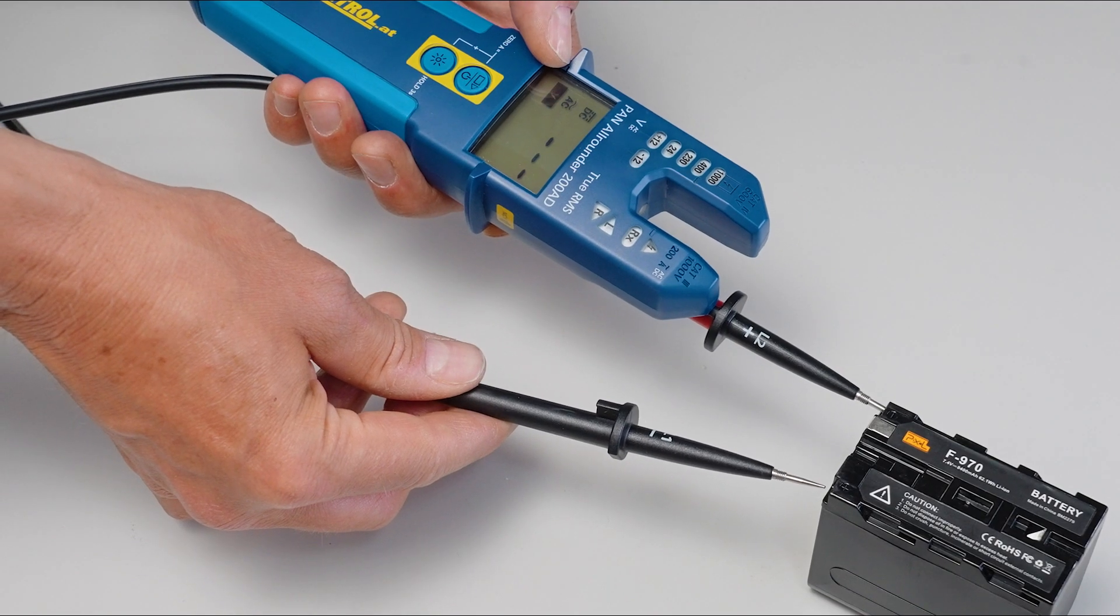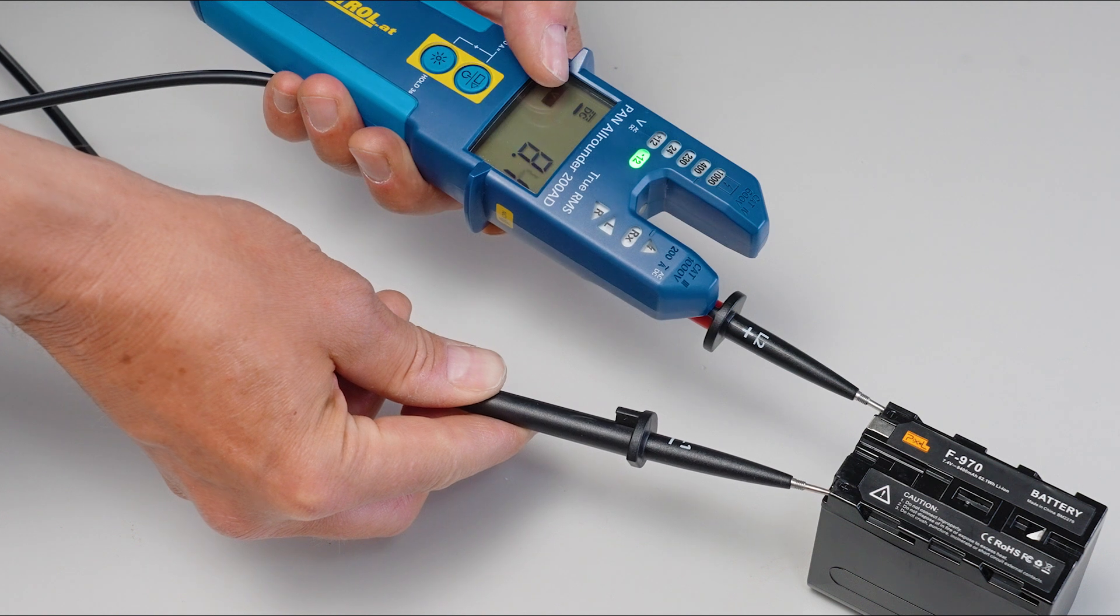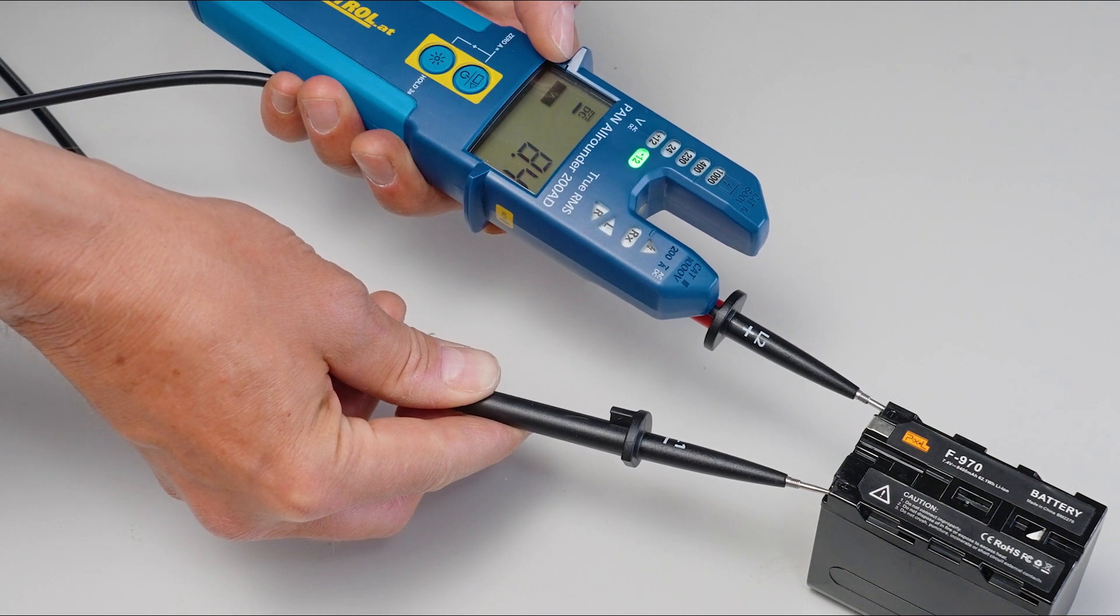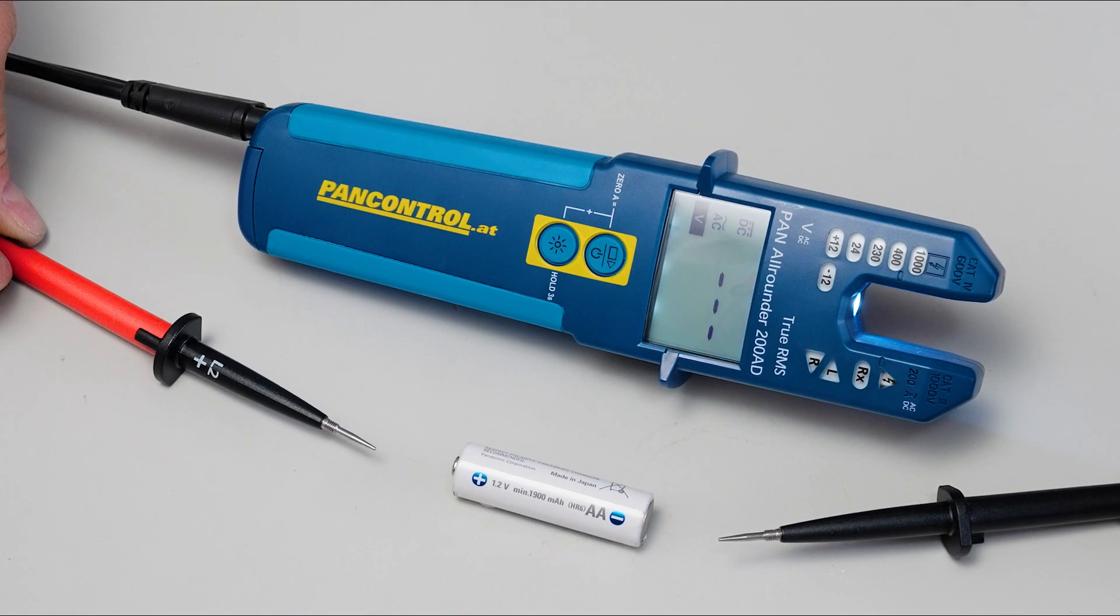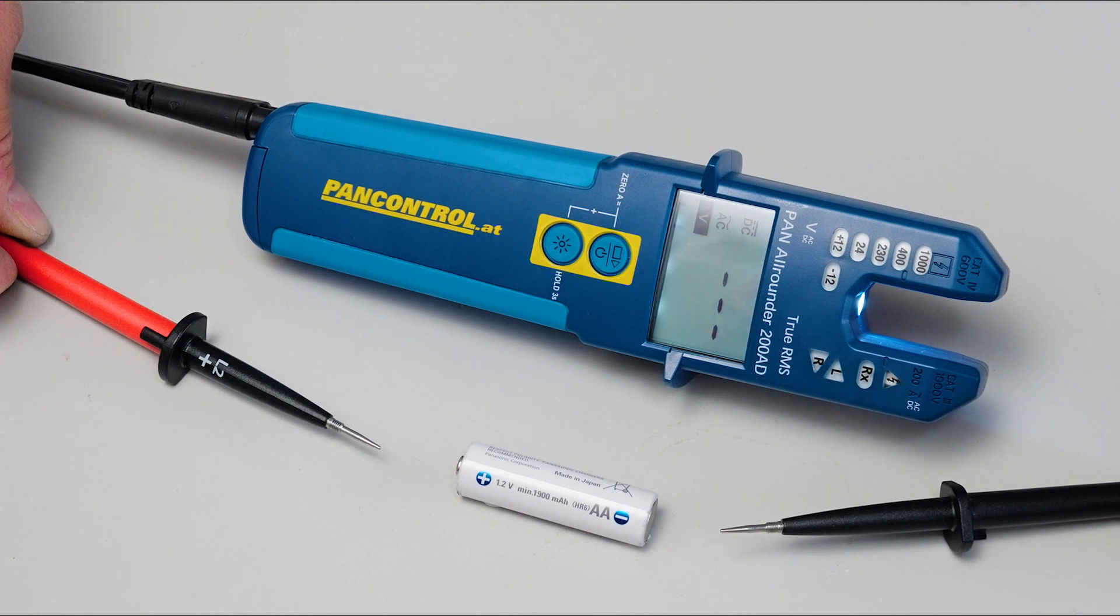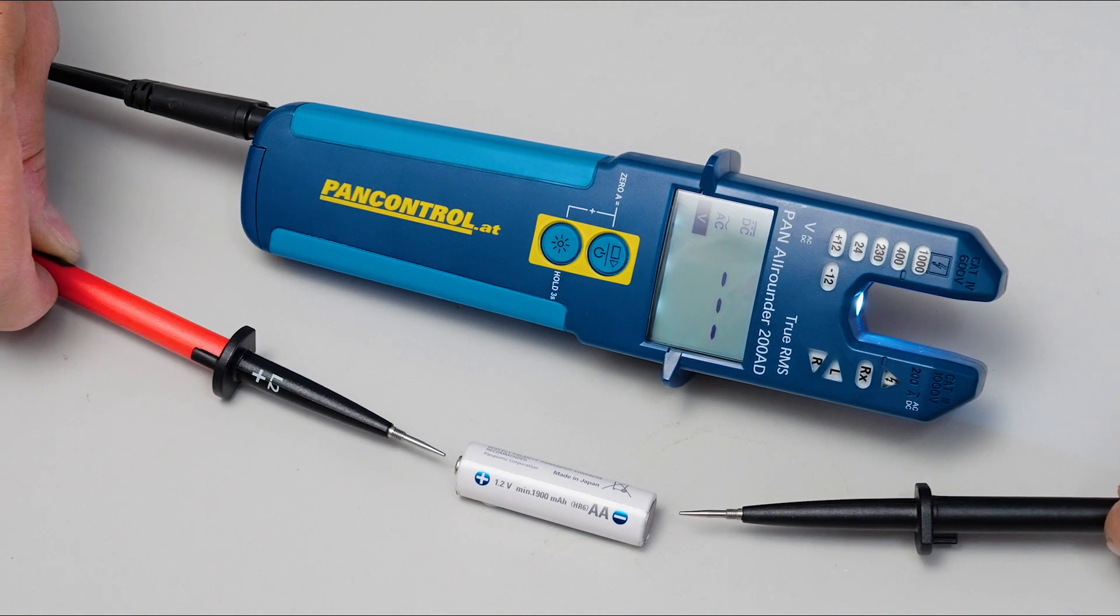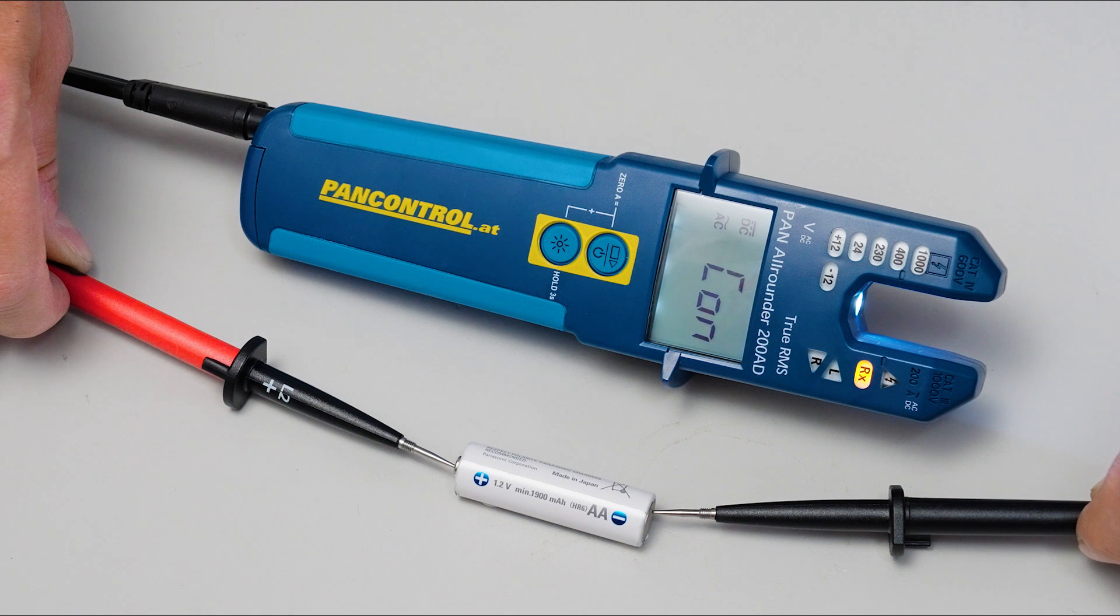When the red test tip touches the minus pole, the minus is shown in the display. Very small voltages below 6V cannot be measured in the standard range. Instead Pan Allrounder shows continuity.